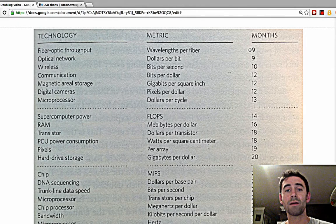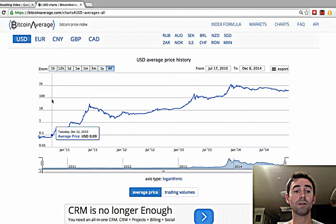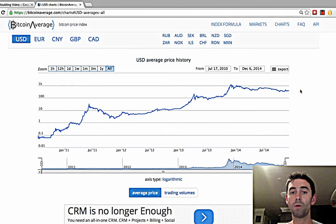Now let's bring this back to money. We look at the logarithmic chart of Bitcoin, you also see this almost straight line.